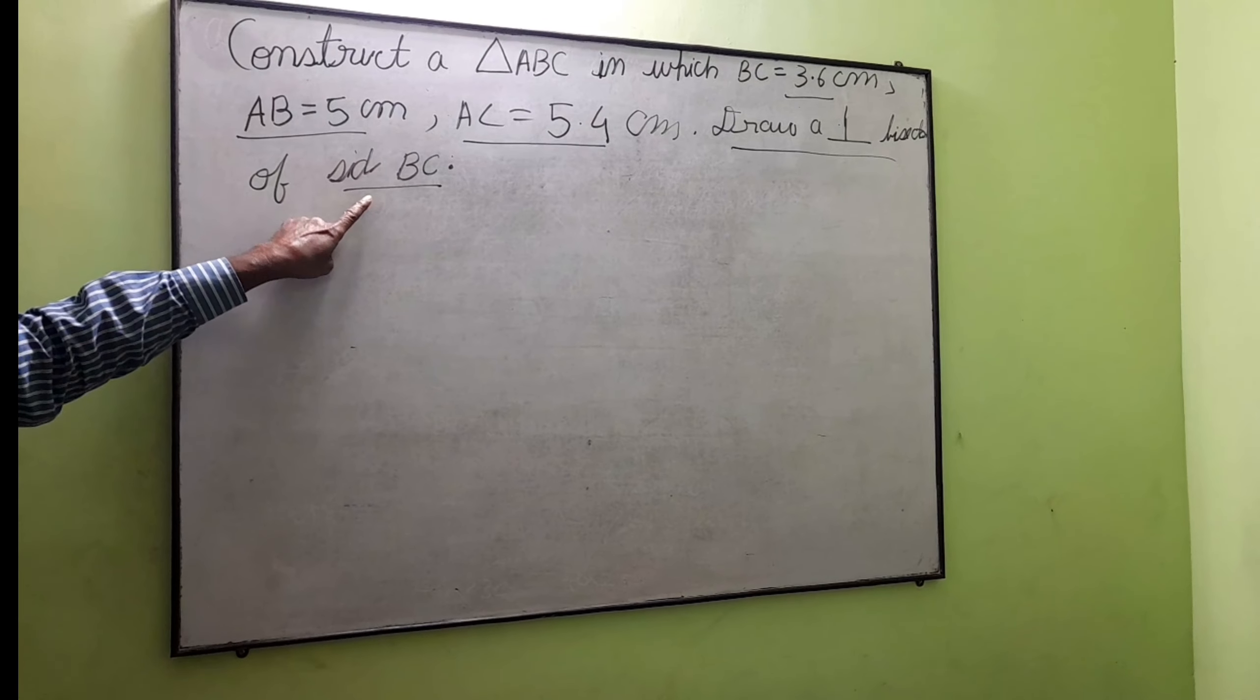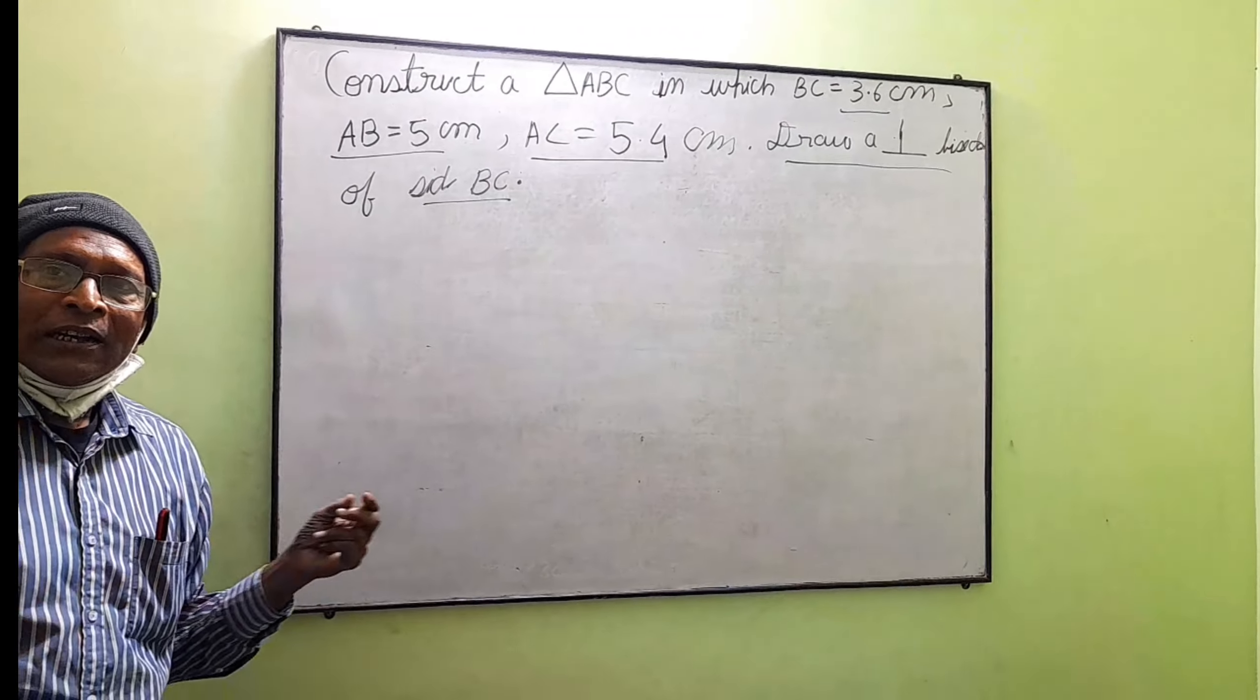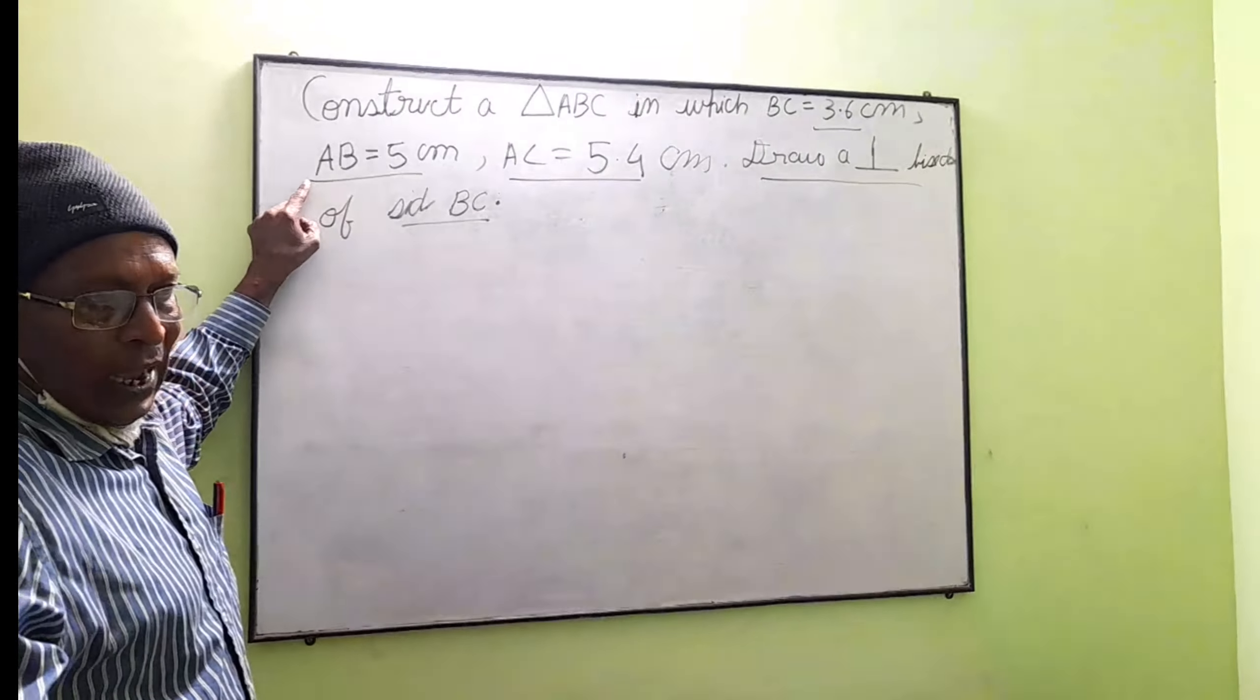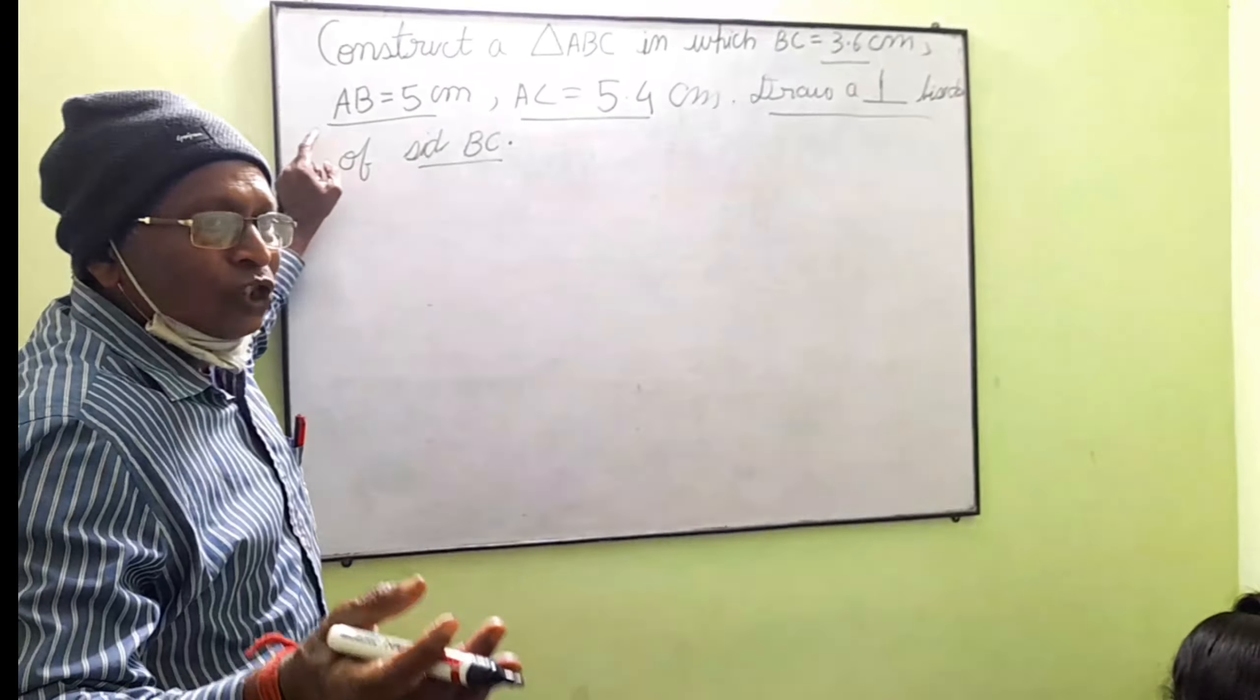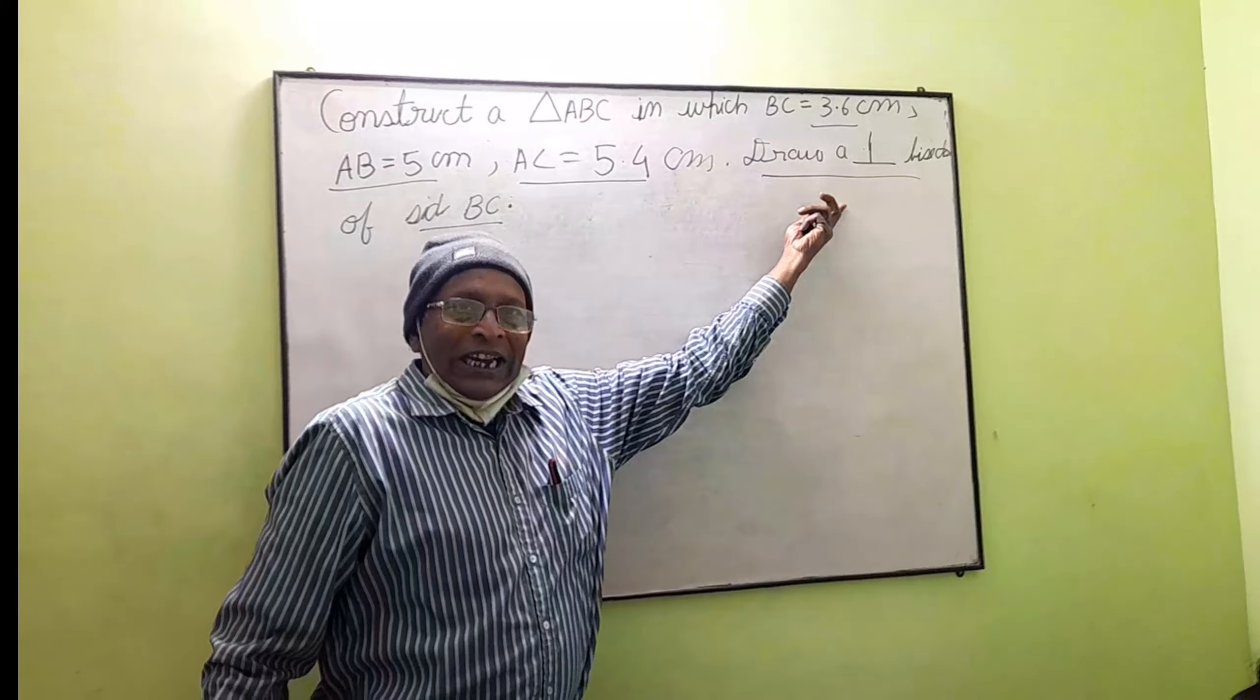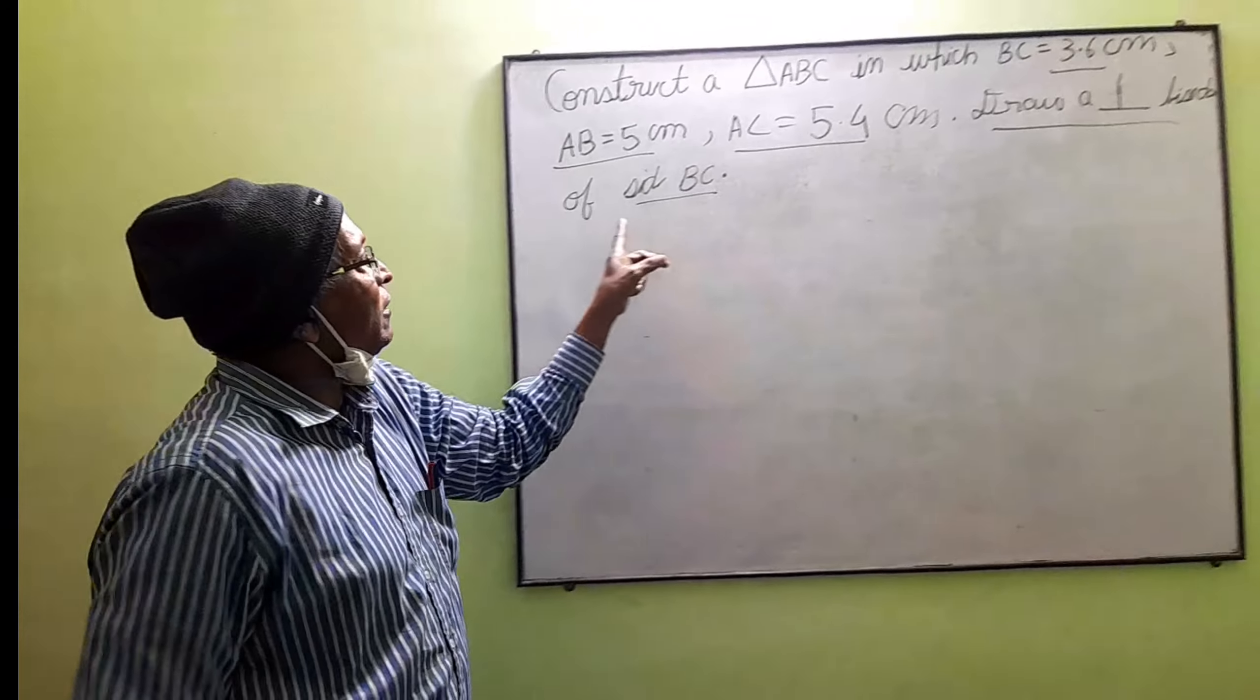This is all already mentioned here, so there's no doubt which line segment you have to make as the base. A triangle has three line segments. If it was not mentioned, you could make any side the base, but here you have to draw the perpendicular bisector of BC, so BC will be the base.